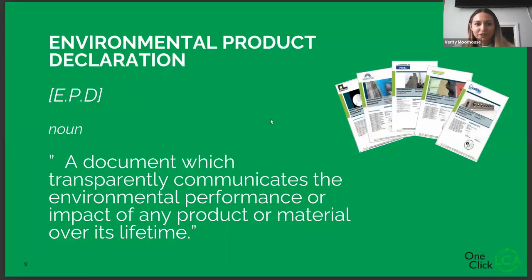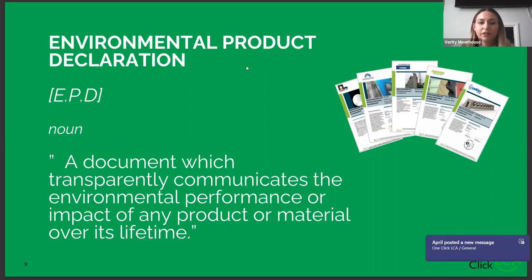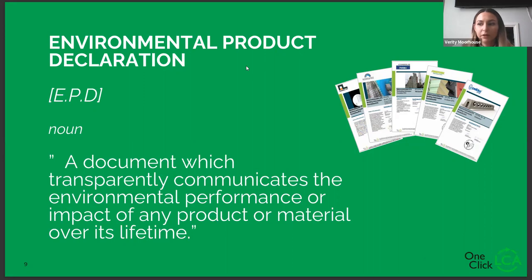An EPD — an environmental product declaration — is basically a document which transparently communicates the environmental performance or impact of a product over its lifetime. They are based on standards and they do have to be third-party verified as well.